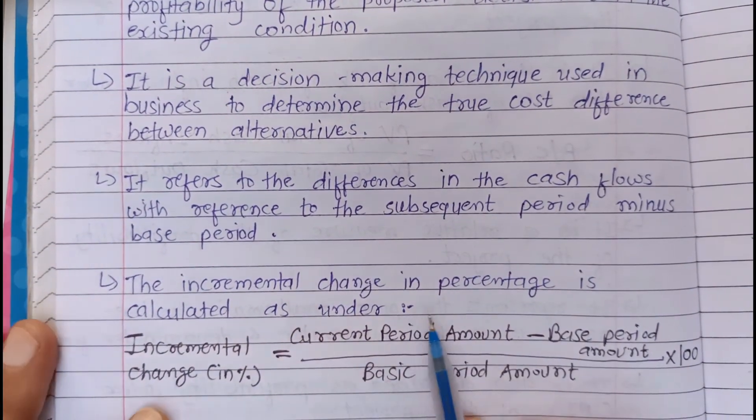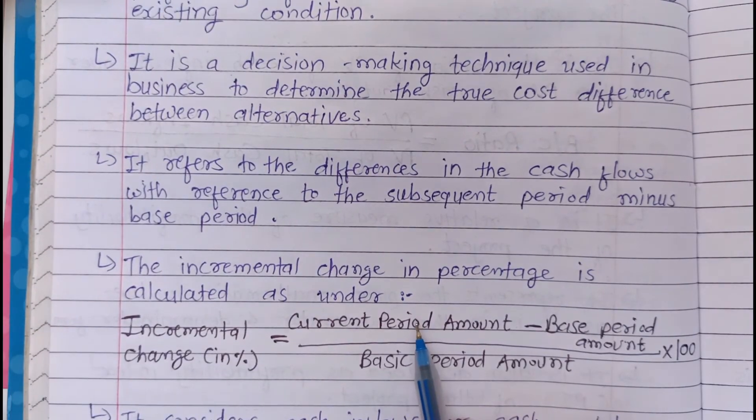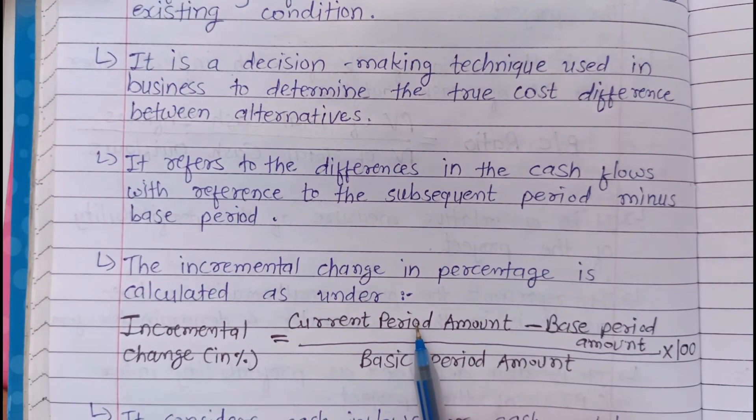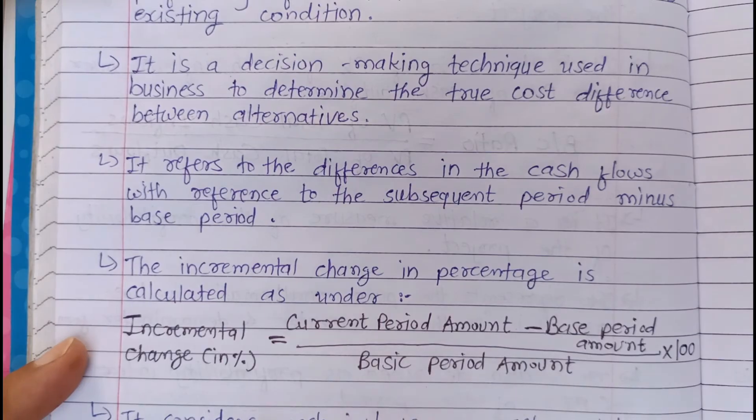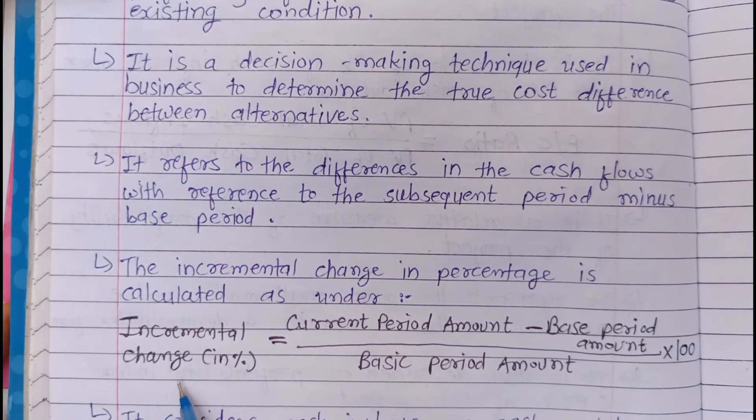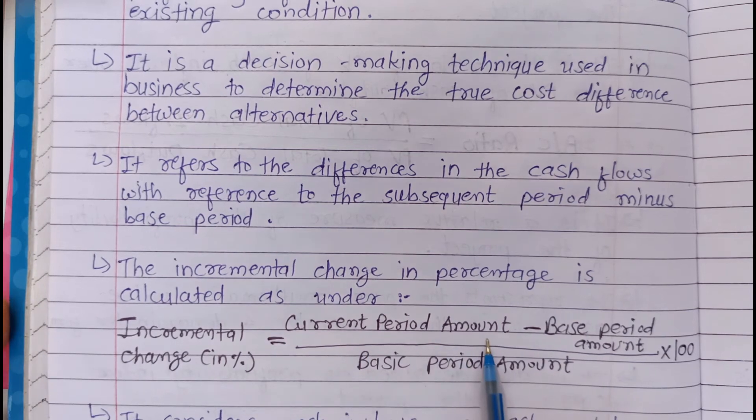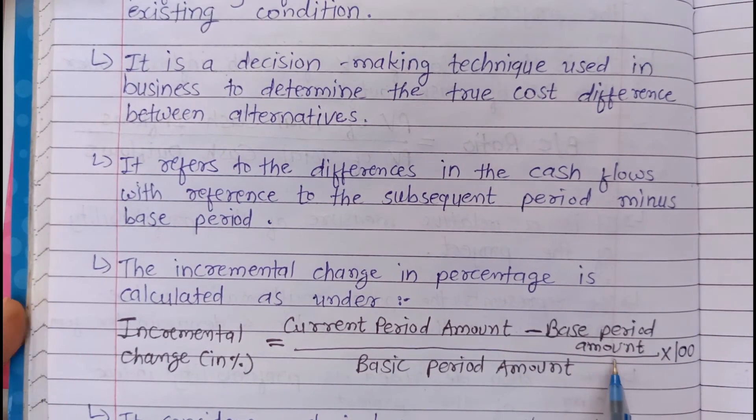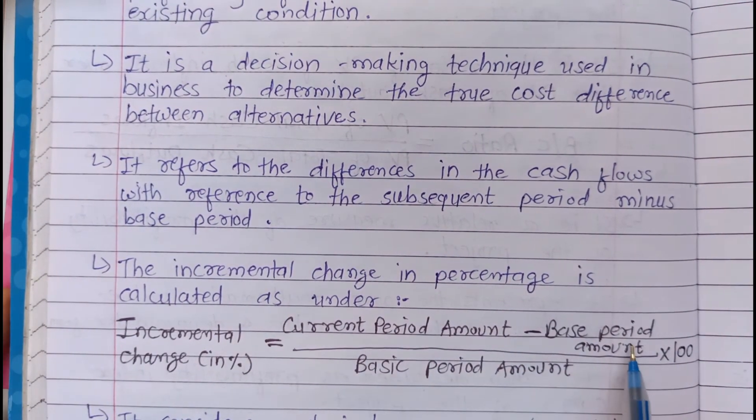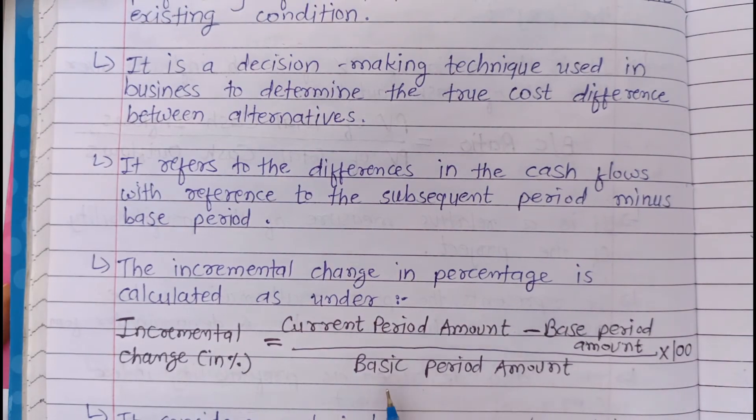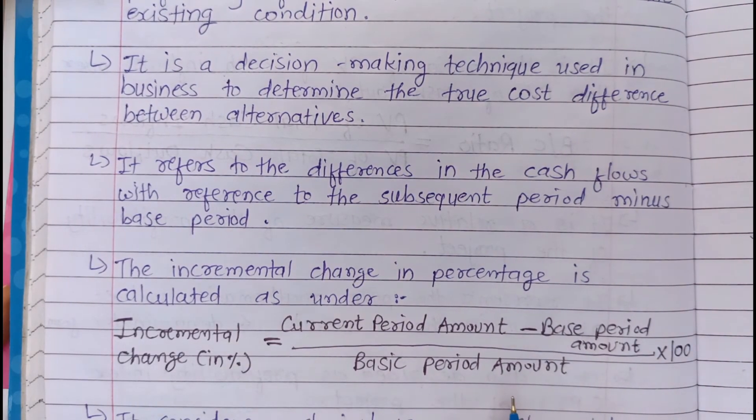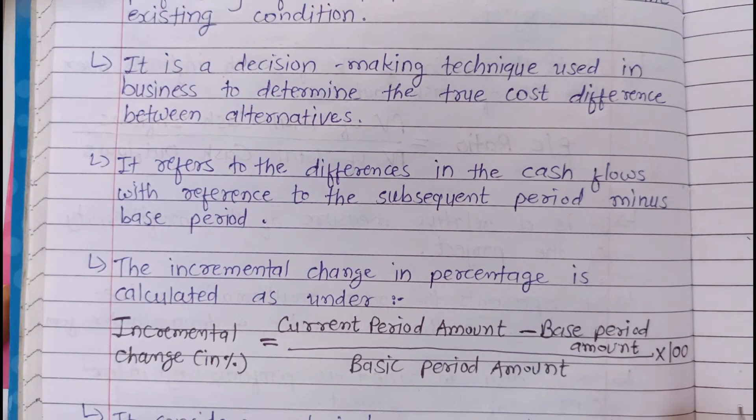It refers to the differences in the cash flows with reference to the subsequent period minus base period. The incremental change in percentage is calculated as under: incremental change percentage equals current period amount minus base period amount, divided by basic period amount times 100.